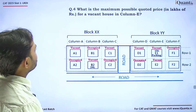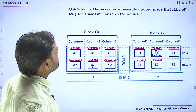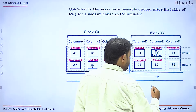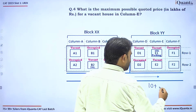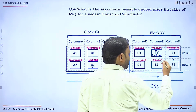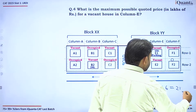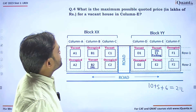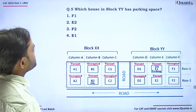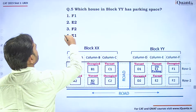Question 4: What is the maximum possible quoted price in lakhs for a vacant house in Column E? E1 is 15 lakhs. For E2: base price 10, road adjacency 5, and if F2 is also occupied the neighbor count is 2, giving 6 lakhs — so the maximum price for E2 is 21 lakhs. The answer is 21. Question 5: Which house in Block YY has parking space? That is definitely E1 — option 4.